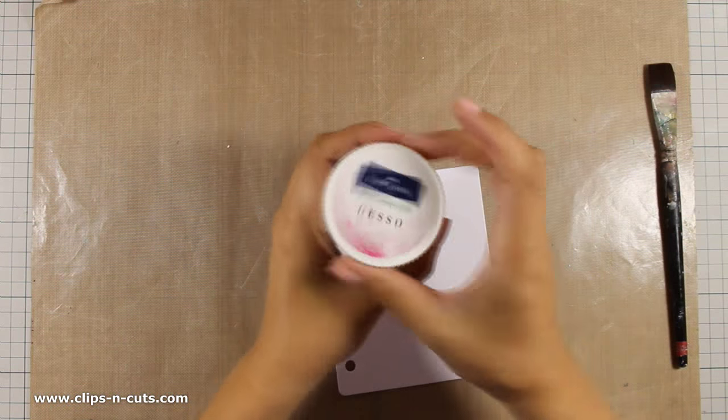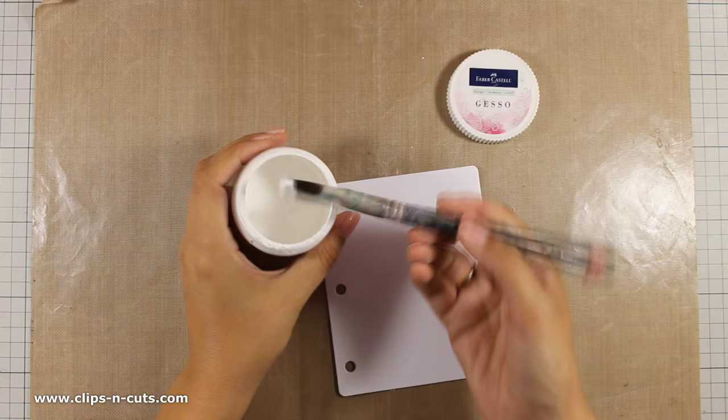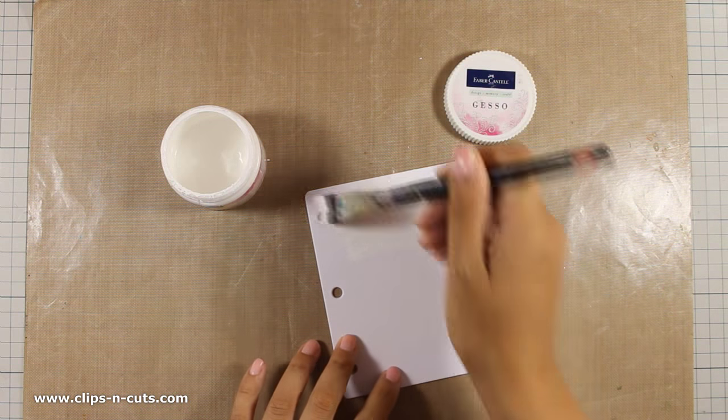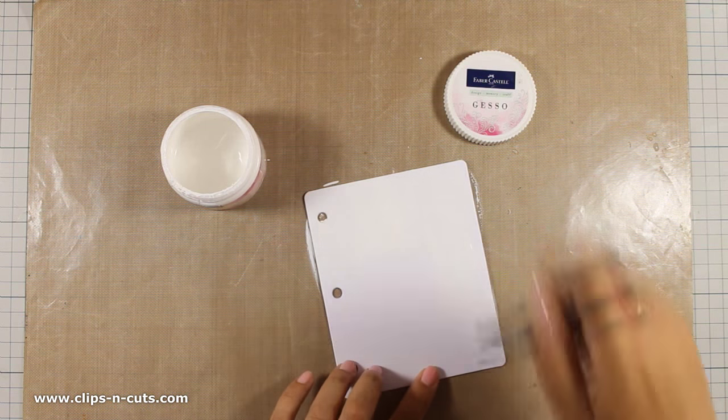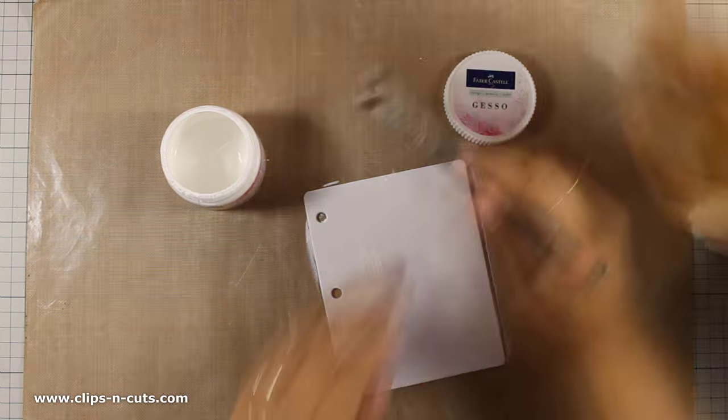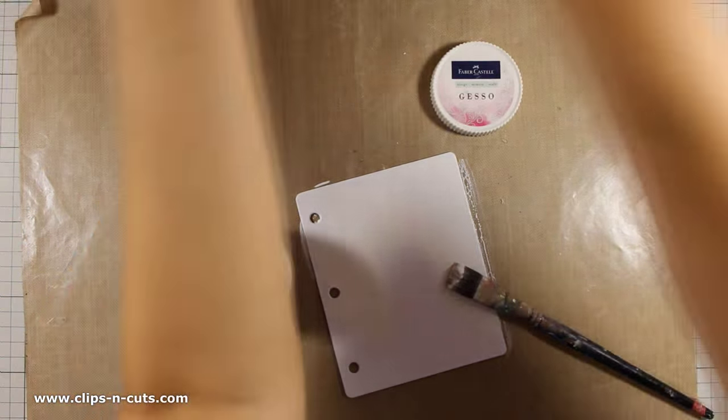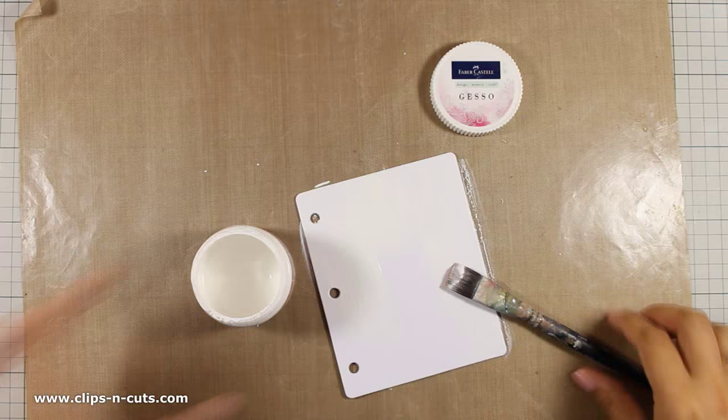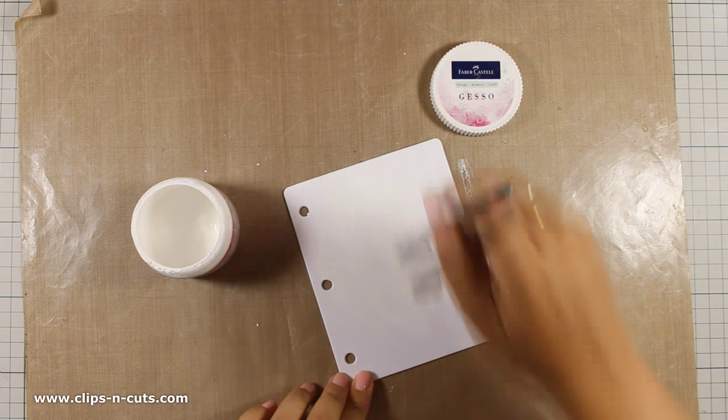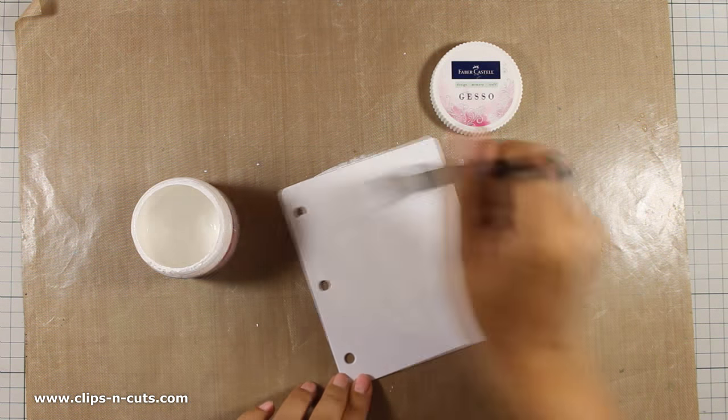I'm going to start up the page by applying some gesso, and that's because gelatos really blend nicely when you work on a gessoed surface. The gesso that I'm using is nice and liquid, so it's very easy to apply, and it is by Faber-Castell.